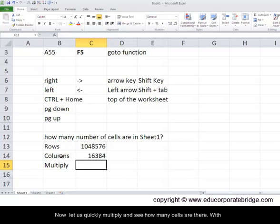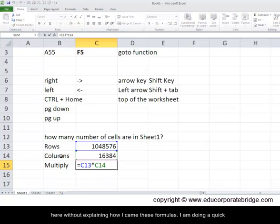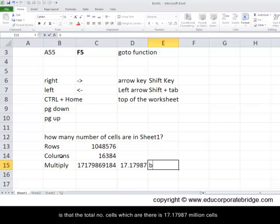Now let us quickly multiply and see how many cells are there. With the assumption that I will be explaining you the multiplication and division functions in greater detail later, let me just prove a point here without explaining how I came to these formulas. I am doing a quick division so as to convert this data into billions. And what do we find out is that total number of cells which are there is 17.17987 billion cells in sheet 1.